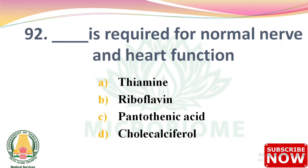Next question: dash is required for normal nerve and heart function — options: thiamine, riboflavin, pantothenic acid, cholecalciferol. The right answer is Option A: thiamine, that is vitamin B1.